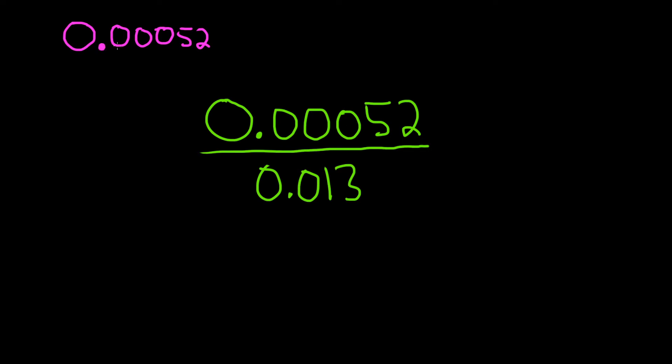So let's take this decimal and move it over to the end. So 1, 2, 3, 4, 5. So we moved it 5 positions. So that would be the same as saying 52 times 10 to the negative 5.